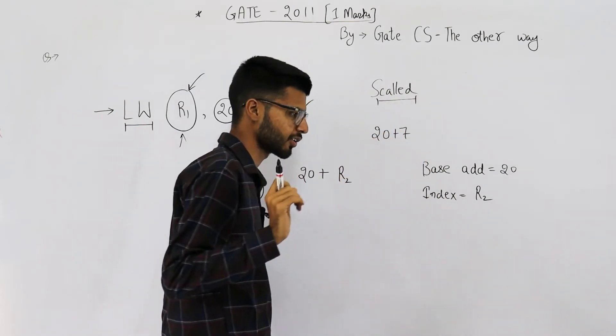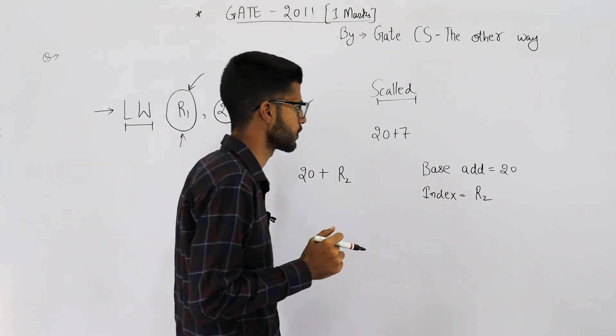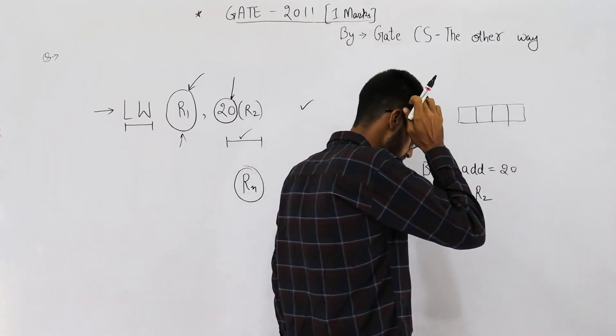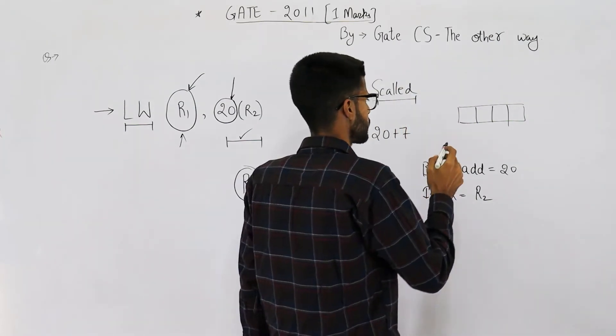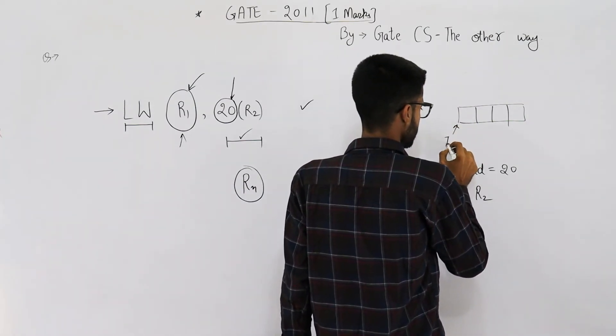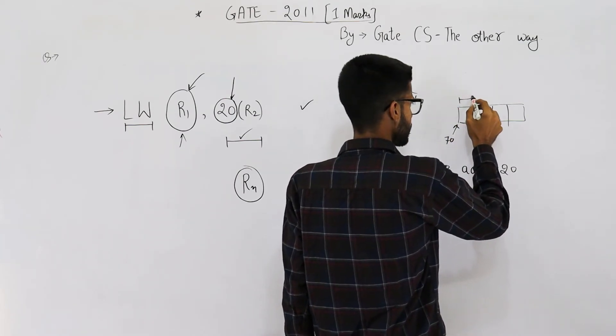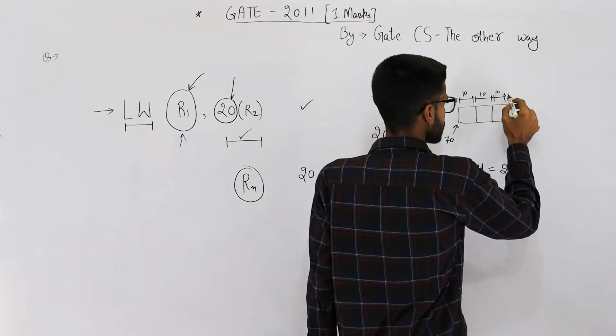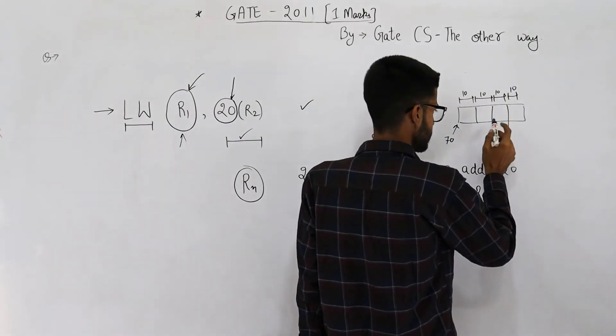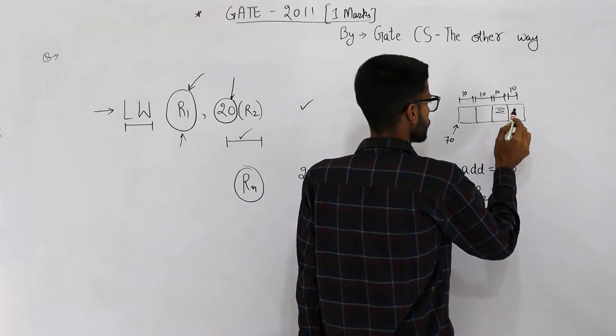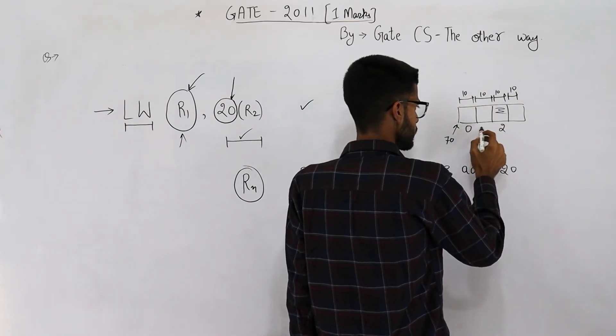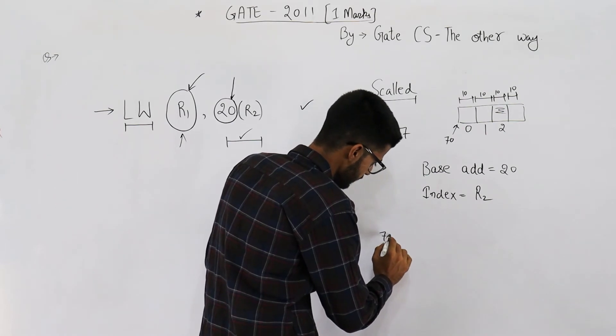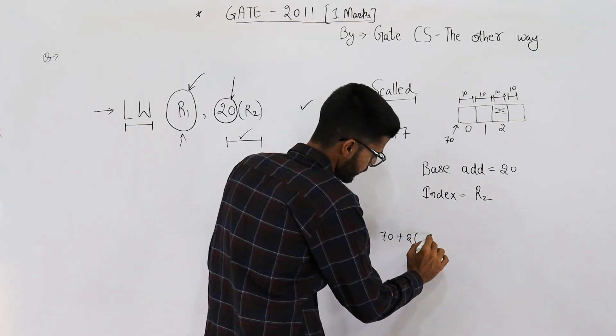Scaled means scaling is done automatically by the processor or by the addressing mode used. For example, say this is some array. It's mostly used for accessing arrays or sometimes in structures also. Say its base address is 70. And each element is of 10 bytes or 10 words. Now, the address or index of this element, this one is going to be 2 because this is 0, this is 1, this one will be 2.